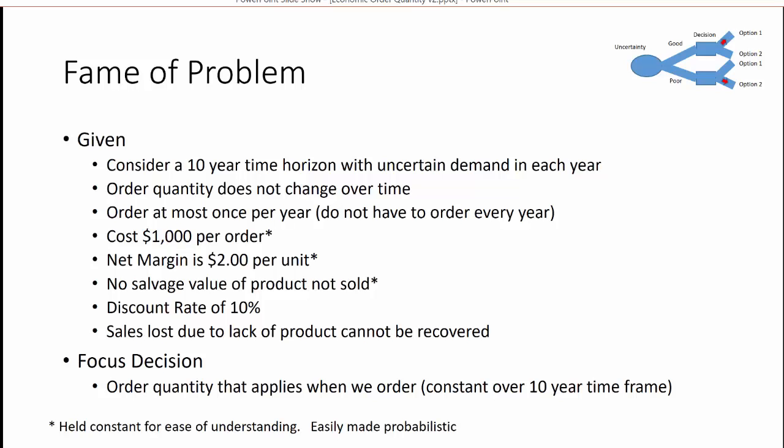The items marked with an asterisk here are items that we're going to hold constant through the 10 years. However, in the modeling we're going to be doing, it would be easy to change these to be probabilistic.